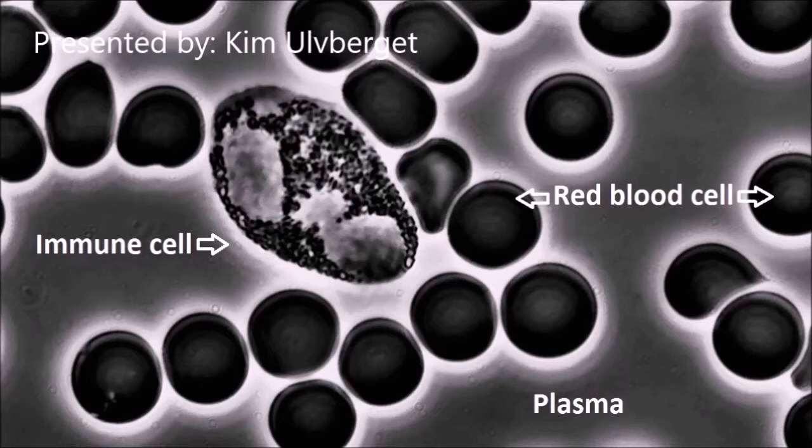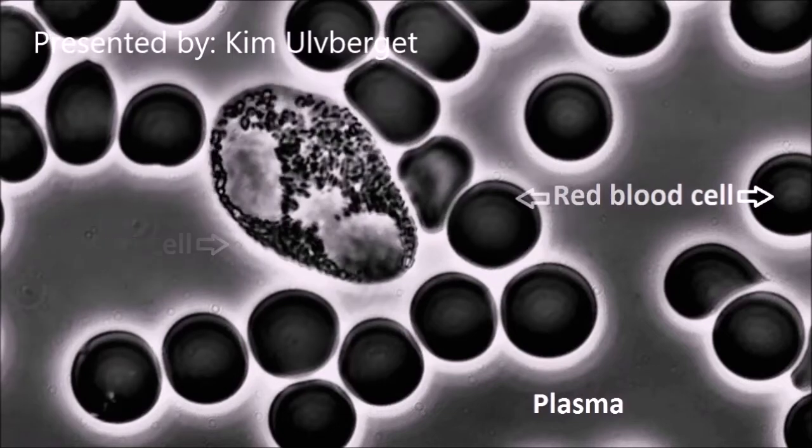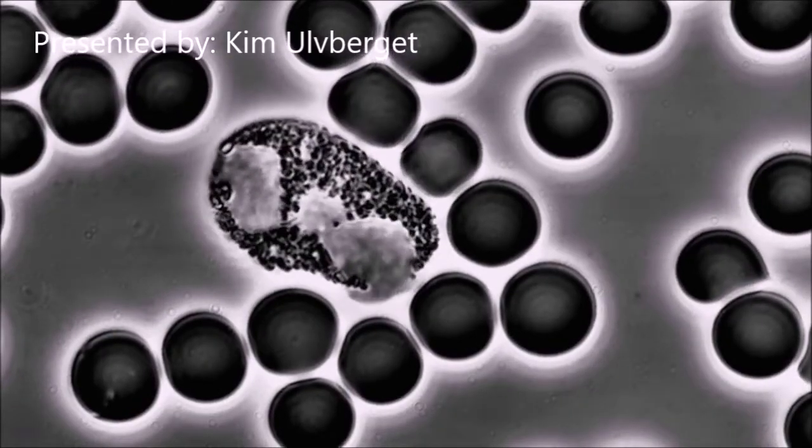The red blood cells have a smooth color and shape. They move around freely and they do not stick together. This is the first sign of a healthy environment in the blood.